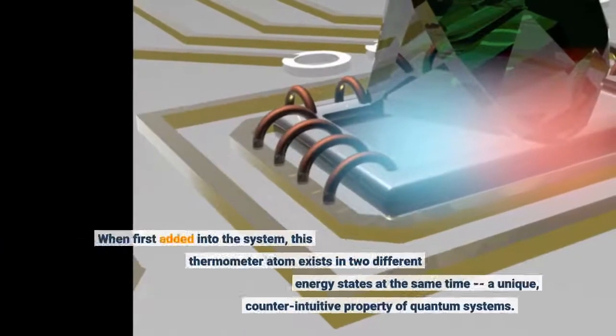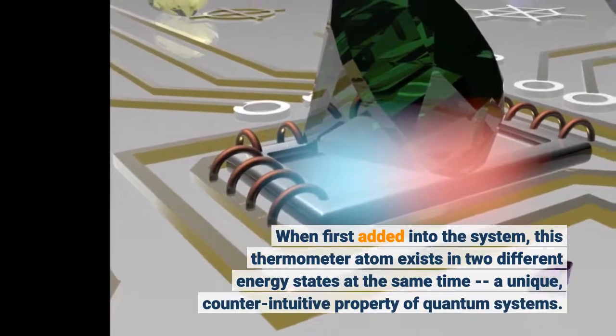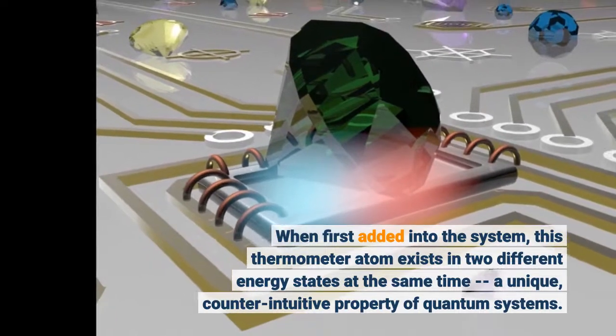When first added into the system, this thermometer atom exists in two different energy states at the same time, a unique, counter-intuitive property of quantum systems.